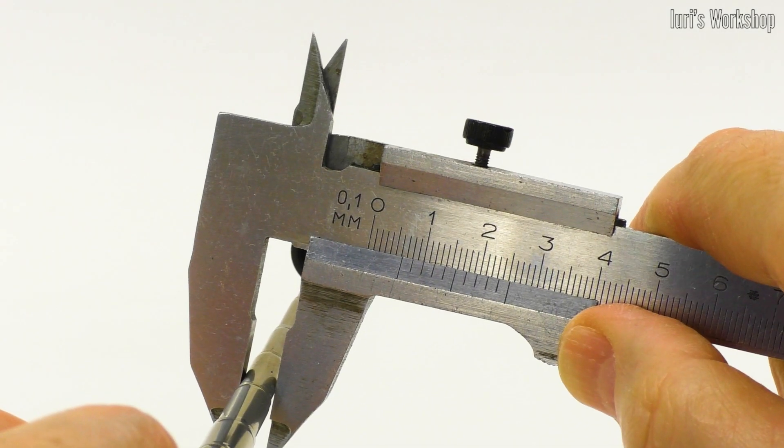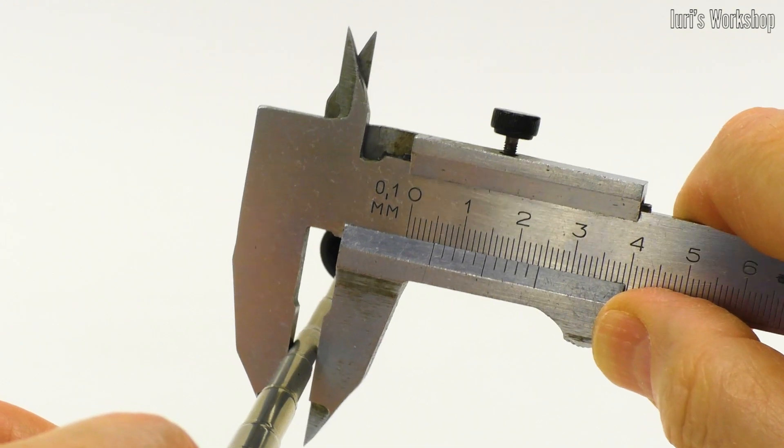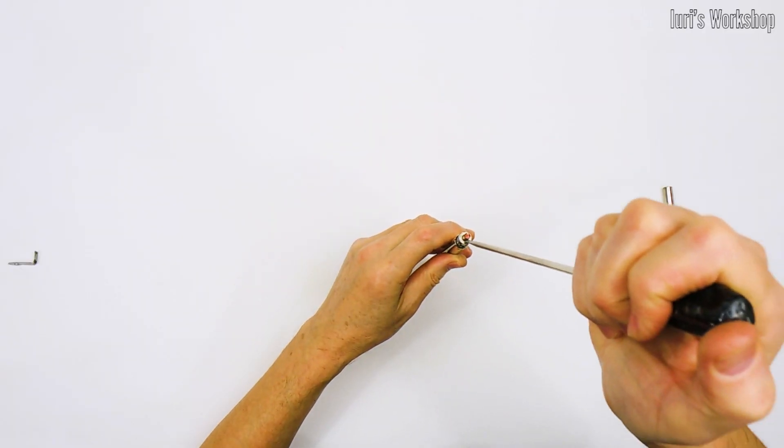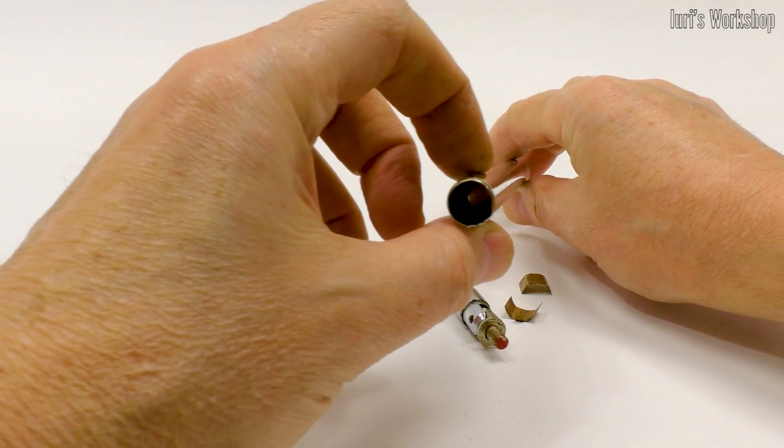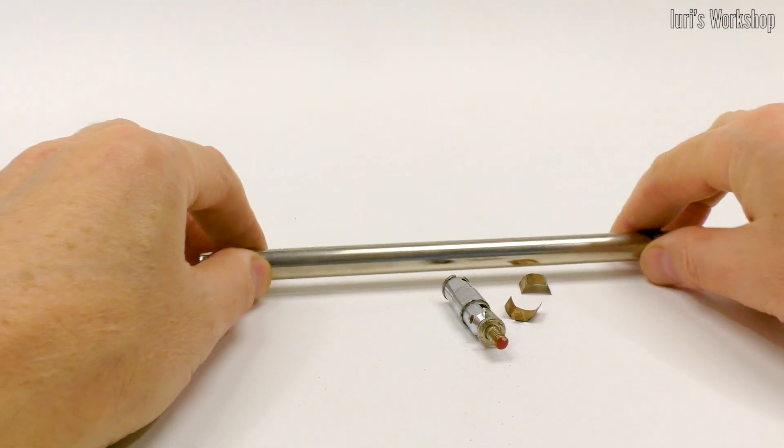The diameter of the tubes of the telescopic antenna is a multiple of 1 mm. And we will need two sections, with a diameter of 12 mm and 5 mm.